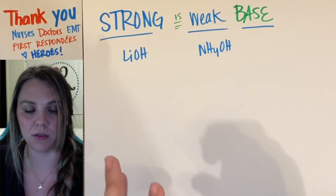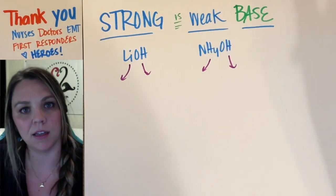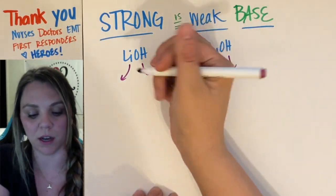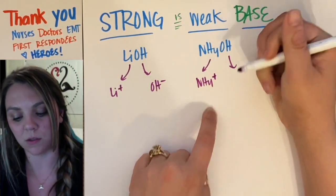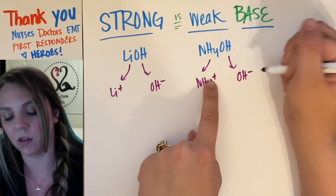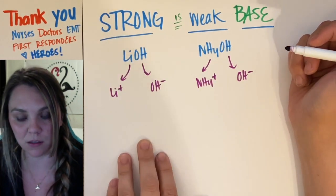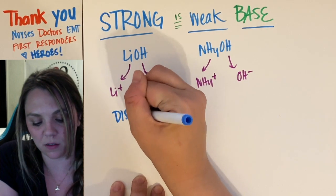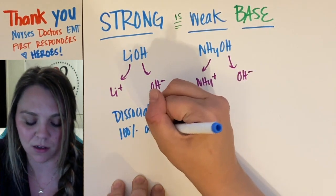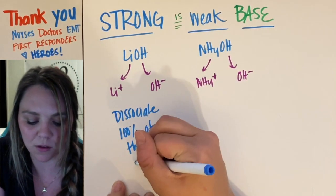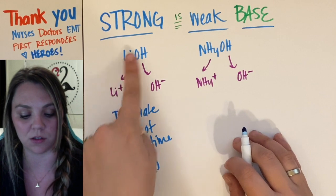When you put these hydroxide compounds into water, they're going to dissociate — they're going to break apart. The cation and anion are going to split into their ions. So you get lithium plus and hydroxide minus, or NH4 plus — ammonium with a plus one charge — and hydroxide with a minus one charge. Strong bases are going to dissociate 100% of the time. They will fully dissociate, so you're getting all ions in your solution: Li+ and OH−.